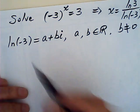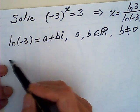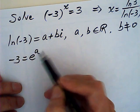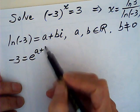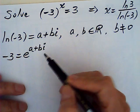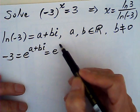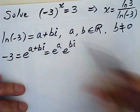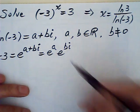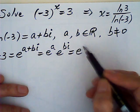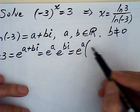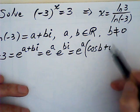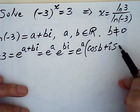So, now we can derive that negative 3 is equal to e to the power of a plus bi, which is equal to e to the power of a times e to the power of bi. And by Euler's formula, this is e to the power of a times cosine b plus i sine b.